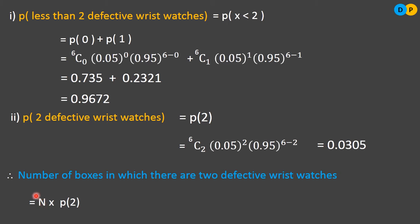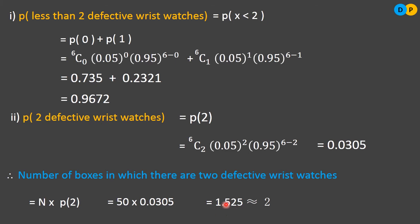Capital N is the total number of boxes, which is 50 (each box having 100 wristwatches). So number of boxes = 50 × 0.0305 = 1.525, which we approximate to 2. Therefore, out of 50 boxes each having 100 wristwatches, approximately 2 boxes will have exactly 2 defective wristwatches.